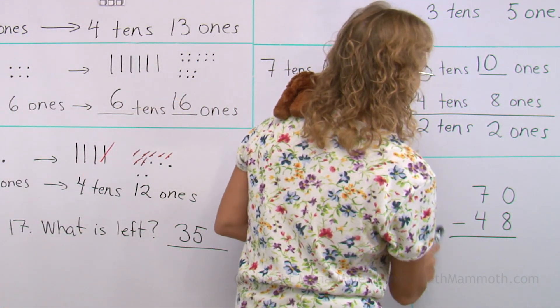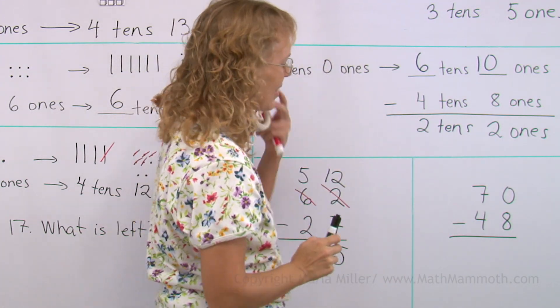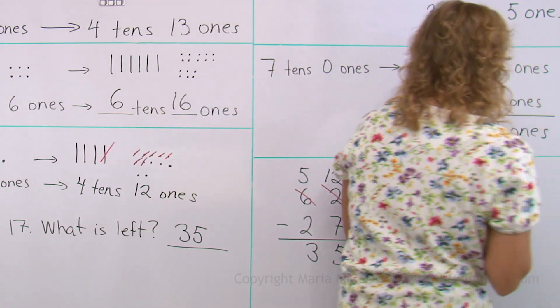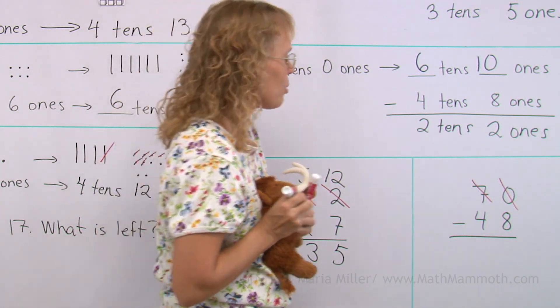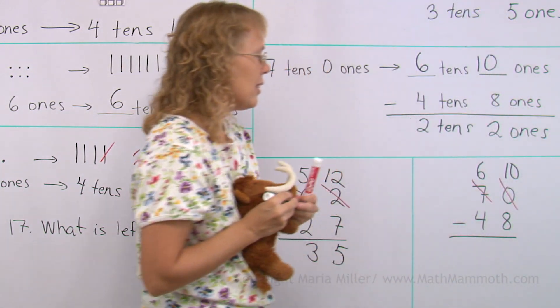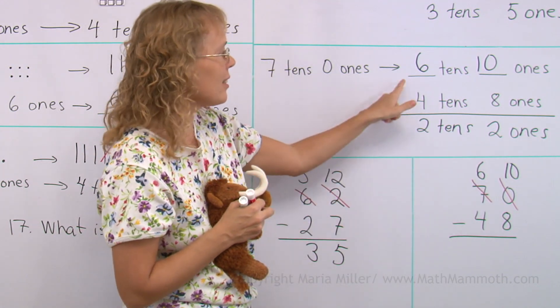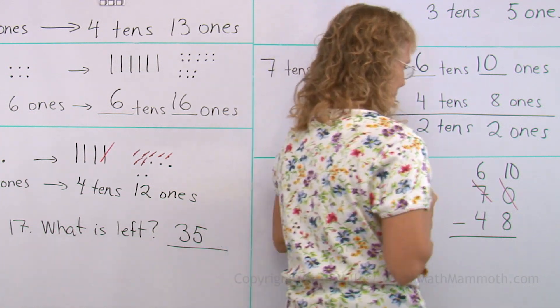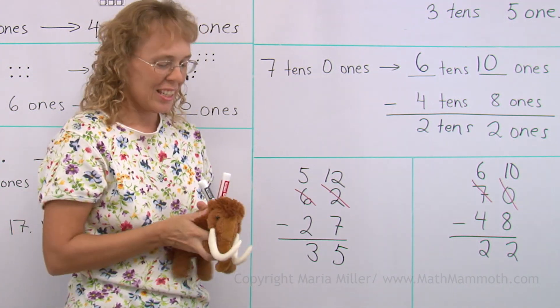Let's do it again. This is the same problem as what we had here. So I guess I can let Mathie do it. We start out by crossing out the seven tens, zero ones, because we are regrouping. And then, like that, we will have now six tens and ten ones. That's the regrouping. Just like it was done here. And then we subtract. Twenty-two. Good job, Mathie.